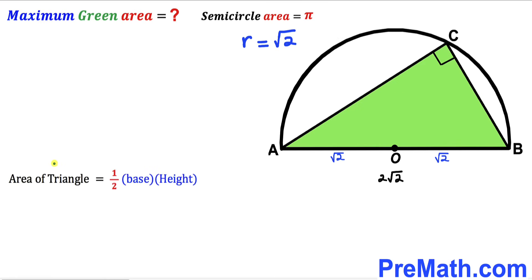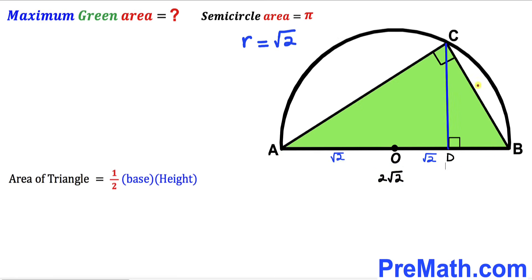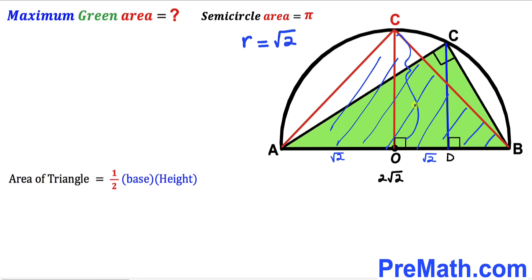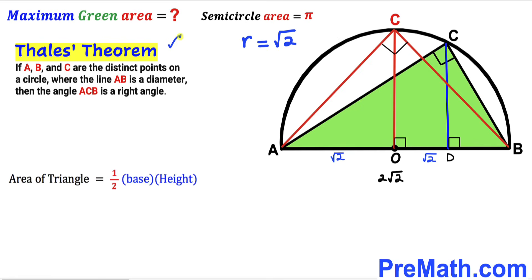Recalling the area of a triangle formula: area equals one half times base times height. The base of this green shaded triangle is 2 times the square root of 2. If we drop the perpendicular CD, that becomes the height. Point C has maximum height OC, giving us triangle ABC with maximum height OC. By Thales' theorem, if AB is the diameter, the angle ACB is a right angle — 90 degrees.